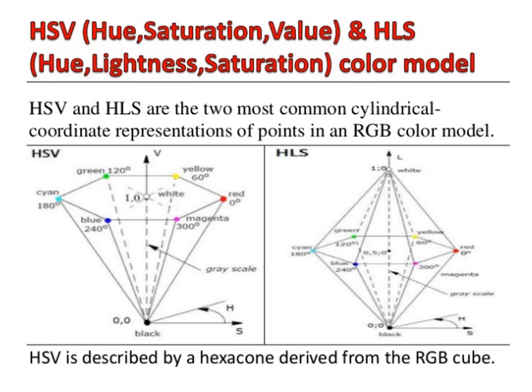The next models are HSV — hue, saturation, value — and HLS — hue, lightness, saturation. HSV and HLS are the two most common cylindrical coordinate representations of points in the RGB color model. In contrast to hardware-oriented models, the HSV color model is user-oriented; it uses color descriptions that have a more intuitive appeal to a user. The color specification in the HSV model can be given by selecting a spectral color and the amounts of white and black to be added.